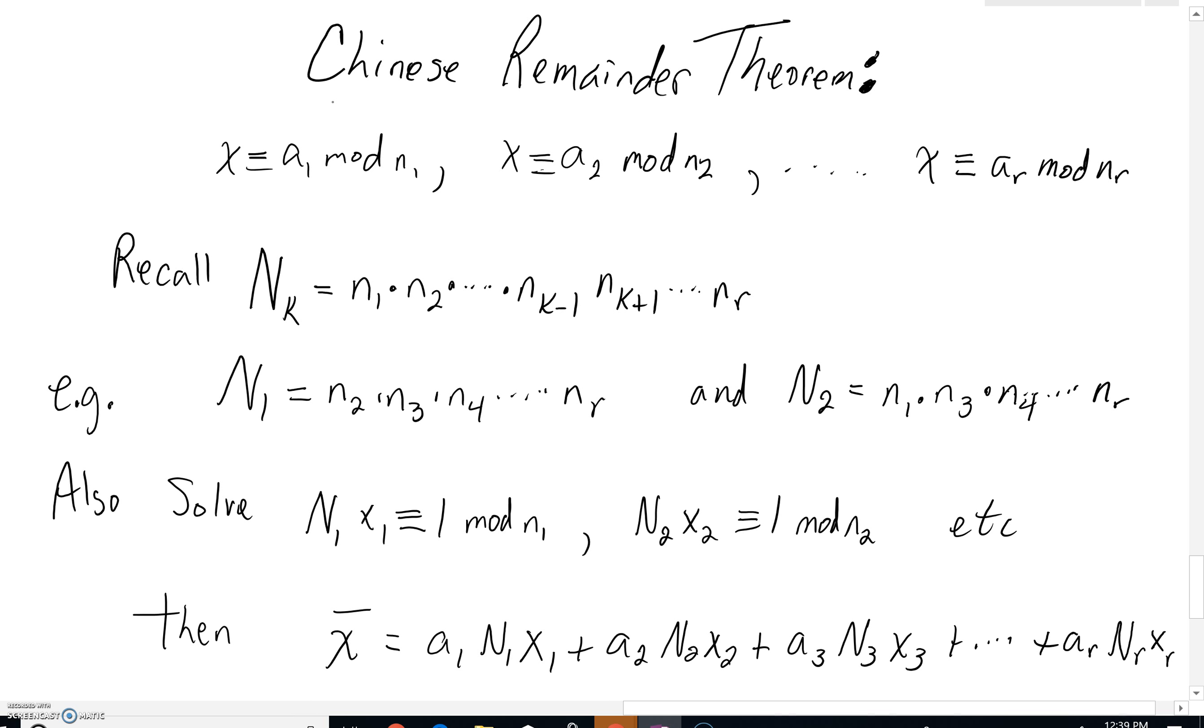The Chinese Remainder Theorem requires that you have a system of equations already set up, just x alone. x would be congruent to a1 mod n1, a2 mod n2, and so forth.